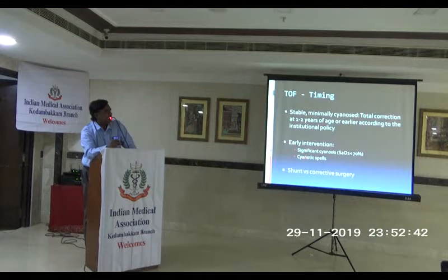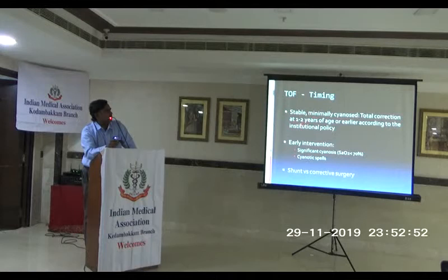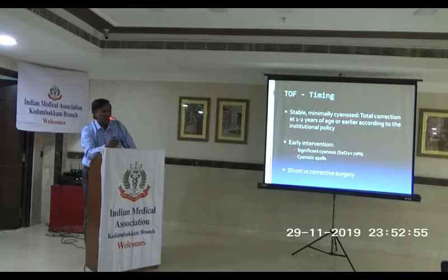If the child is too small — less than 6 months — we do a shunt. If more than 6 months to 1 year, we do a complete repair. Between 1 and 2 years would be a better time. It depends on institutional policy. Over 8 kilos, we are comfortable doing complete repair.